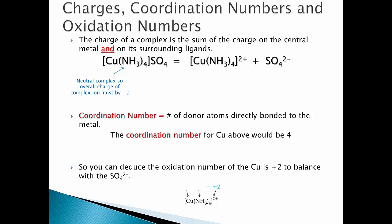For coordination numbers and oxidation numbers: the charge of a complex is the sum of the charge on the central metal and the surrounding ligands. Looking at the example of copper with 4 NH3 and SO4: SO4 has a 2− charge from your supplementary sheet, so the complex must have a 2+ charge overall. The coordination number of copper is 4, since 4 NH3s are bonding to it.